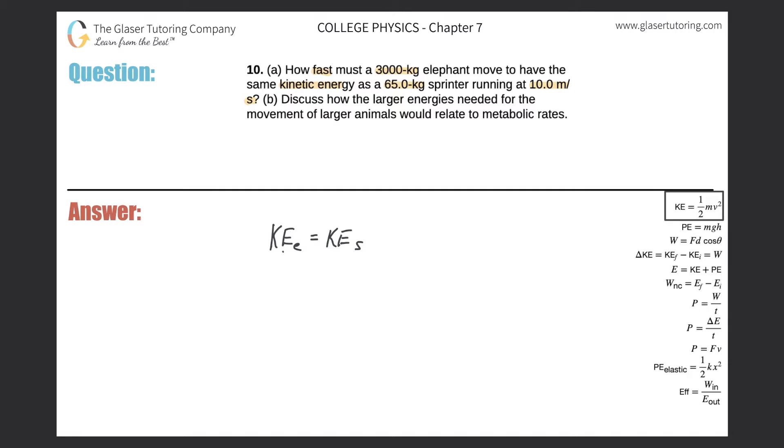So now I can break both of these down into mv squared essentially. So I'll just write down the halves, even though they're going to cancel.